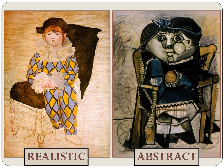These portraits look very different from each other, but the same artist painted them. The first portrait of Paul — Picasso's son — is a realistic-looking painting, like a photograph. But the second portrait does not look realistic. He painted Paloma, his daughter, in an abstract style, which means it does not look real and it does not look like a photograph.